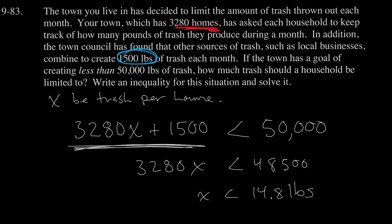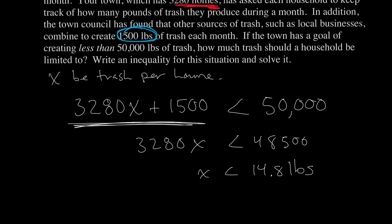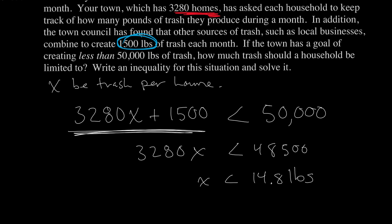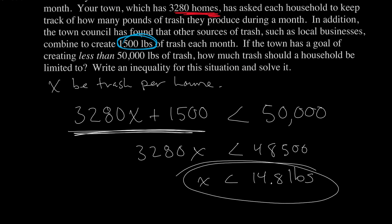So the answer is that each house should produce less than 14.8 pounds of trash per month. I considered whether to round up, since rounding up includes a bit more trash per house, but I'll go ahead and round to the nearest tenth anyway. Each house should produce less than 14.8 pounds. And if that was exactly what they produced and I plug that value back in, this would become very close to 50,000 pounds — so that is my boundary.